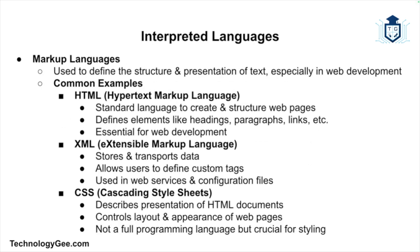Markup languages are used to define the structure and presentation of text, especially in web development. Examples include HTML, or Hypertext Markup Language, which is the standard language used to create and structure web pages — HTML elements define headings, paragraphs, links, and more. XML, or Extensible Markup Language, is used to store and transport data, allowing users to define custom tags, and is commonly used in web services and configuration files. CSS, or Cascading Style Sheets, is a style sheet language used to describe the presentation of HTML documents, controlling the layout and appearance of web pages.